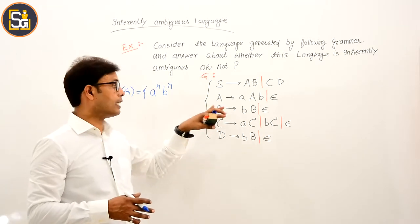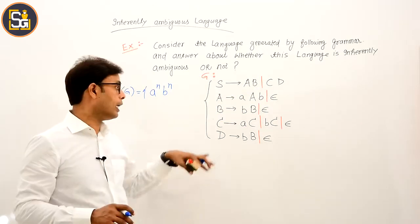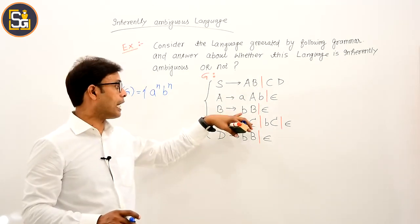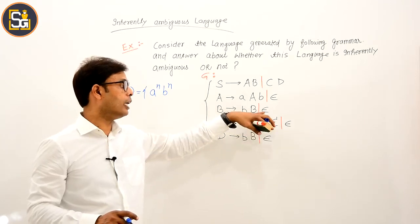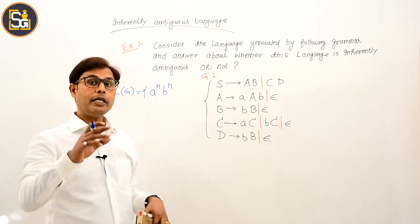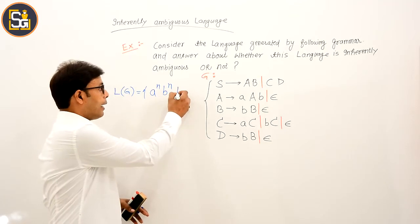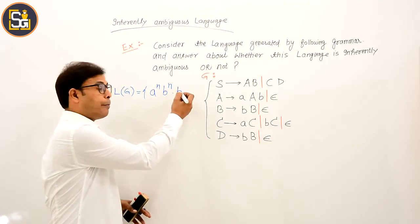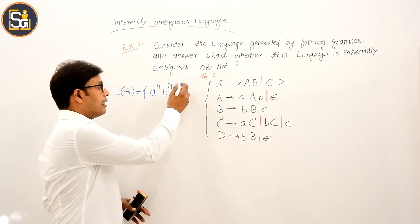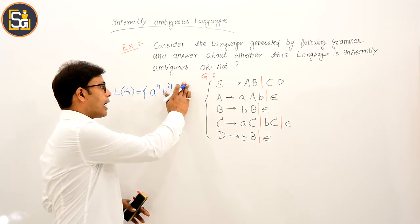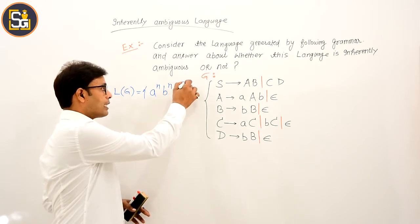Moving to the next part: a is concatenated with B, and B derives b, b, or epsilon — meaning any number of b's. So we can say this generates strings like a^n followed by b^k — any number of b's can follow.